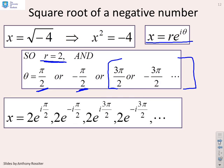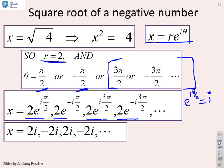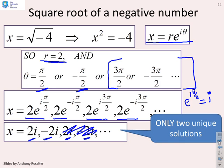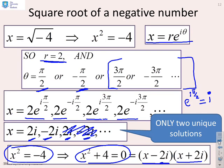Plugging those values in: x equals two e to the i pi by two, or two e to the minus i pi by two, or two e to the i three pi by two, and so on. Recognising that e to the i pi by two equals i, the solutions simplify to two i or minus two i, repeating. As before, there are only two unique solutions. For completeness, as a polynomial: x squared plus four equals zero, which factorises as x minus two i times x plus two i — the same solution.